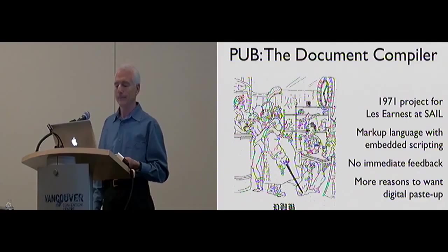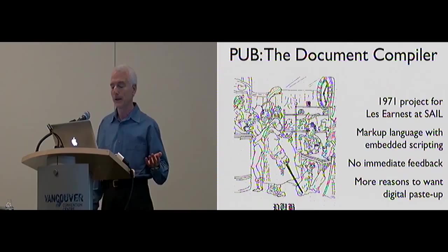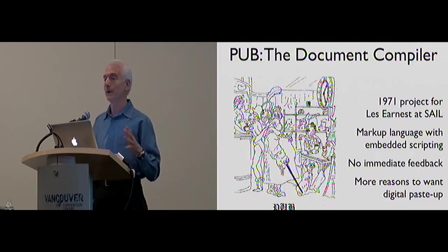The takeaway is: don't be compatible with a bad user experience. Another problem with PUB is that it was a compiler. Users had to compile their specification, look at the output, see the mistakes, go edit the input, run it through again — it was batch. So I thought, this isn't the right way to do it. I really want to do the interactive version where you could immediately see how you screwed up. So I kept looking around for somebody who wanted somebody to do that.